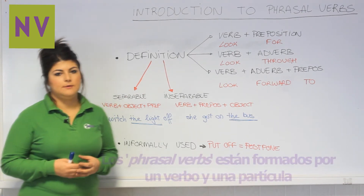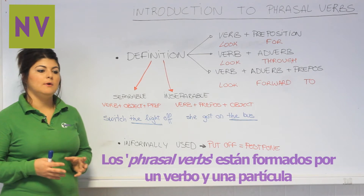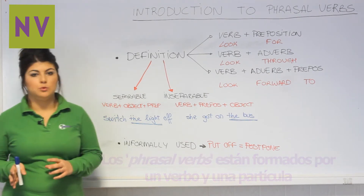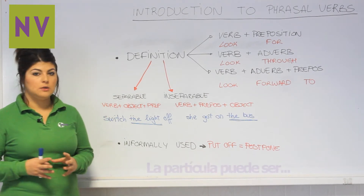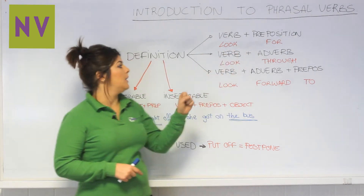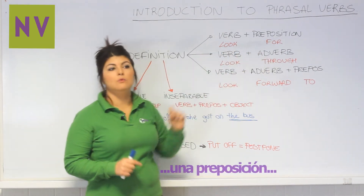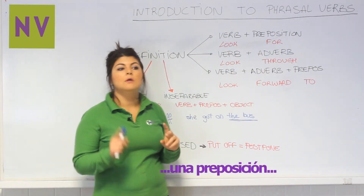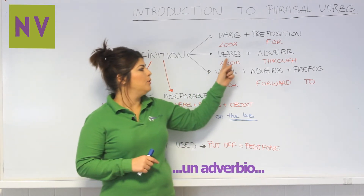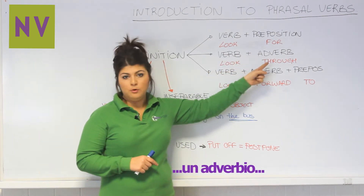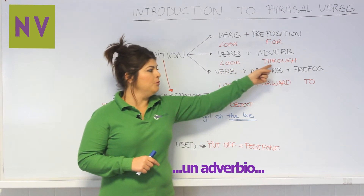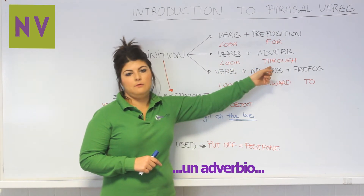What are phrasal verbs? Phrasal verbs are a combination of a verb and a particle. The particle could be a preposition — for example, 'look for,' which means 'search.' Or it could be a verb and an adverb, like for example 'look through,' where 'through' is an adverb.